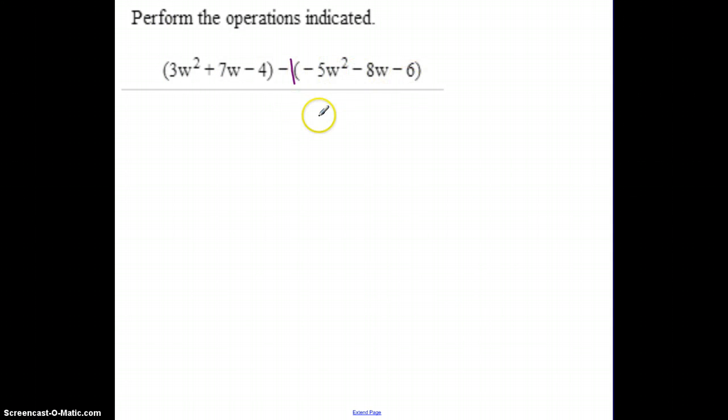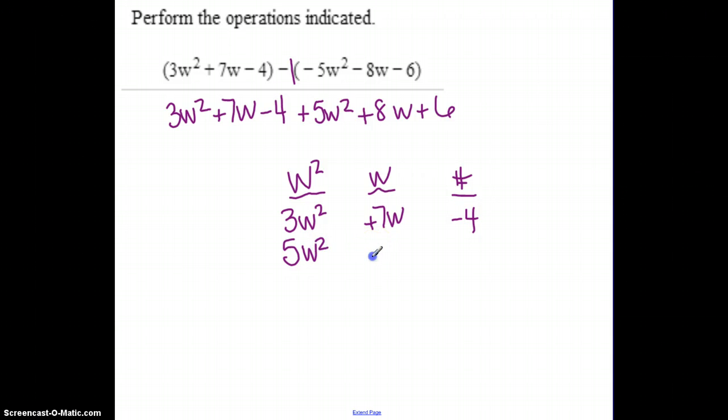Negative 1 influences these. So we change our signs. So positive 5w squared, plus 8w, plus 6. Bring the first one down. And then it's got to be about sorting. So I'm sorting all my stuff out. And then I can total. So 8w squared, 15w, and 2. So that's going to be my final answer.